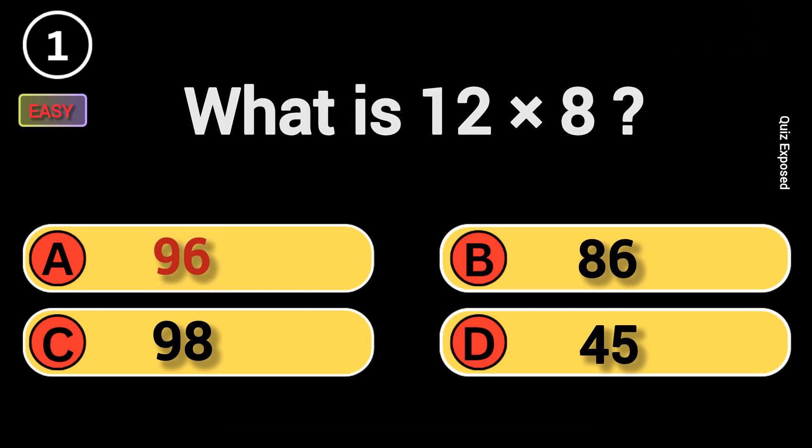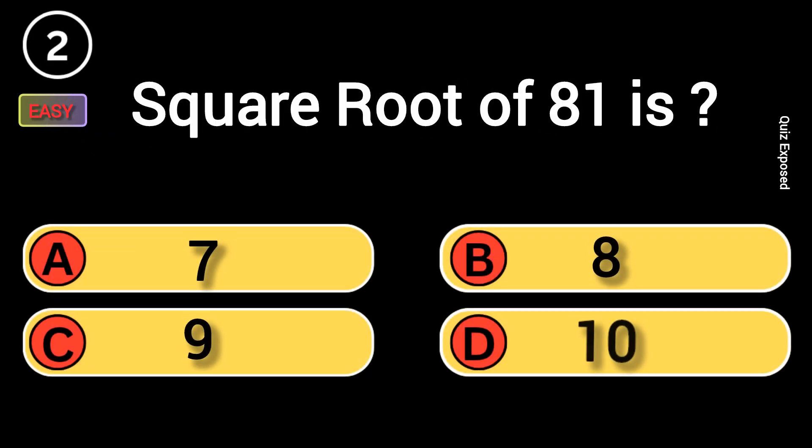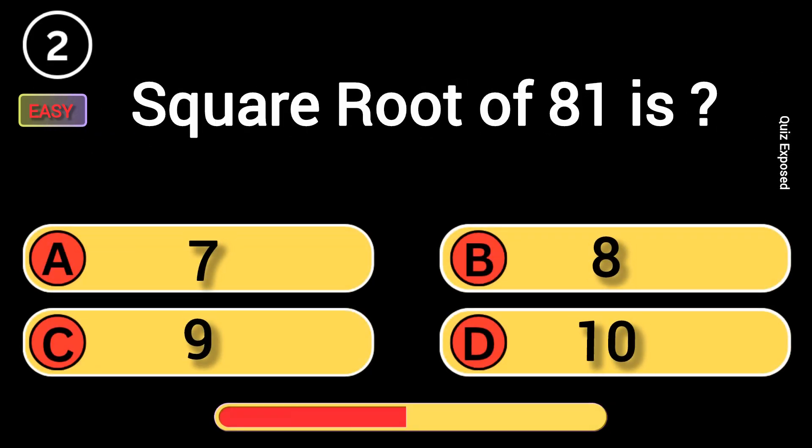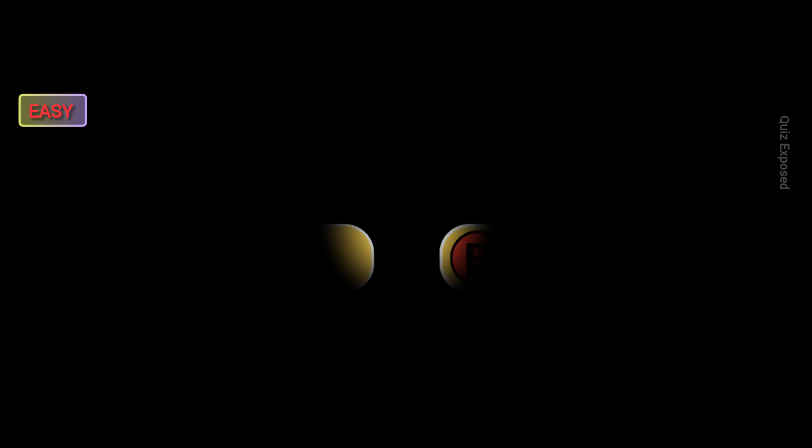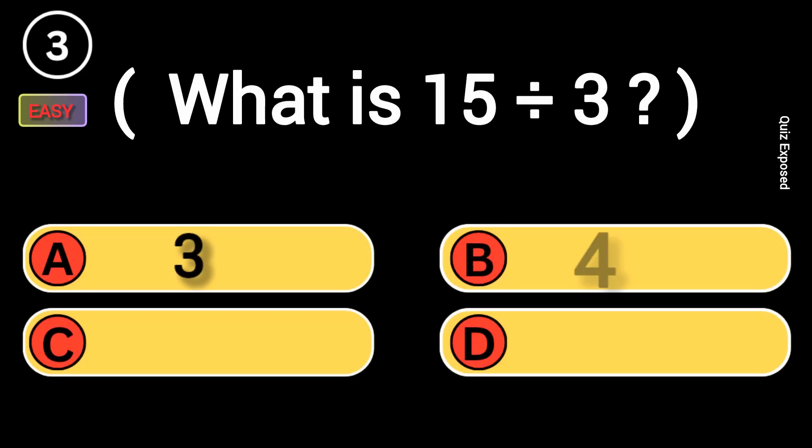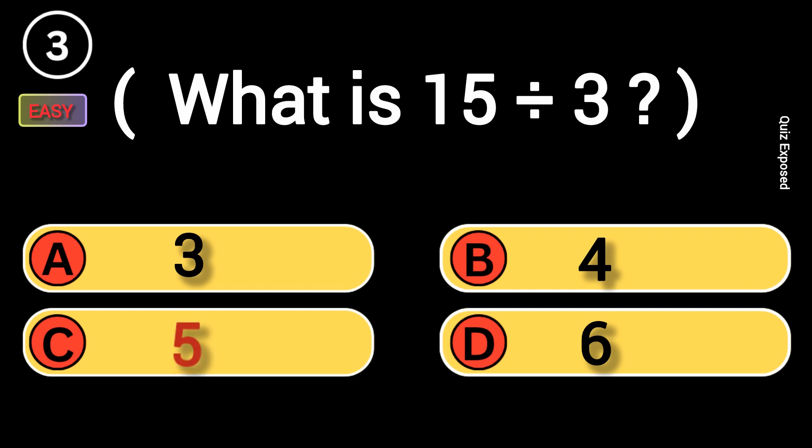Correct, 96. Square root of 81 is? 9 is correct. What is 15 divided by 3? 5 is correct.